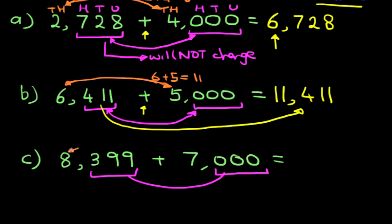The thousands we've got is 8, which is going to be added to the 7,000 over here. So we've got 8 plus 7. 8 plus 7 is 15. And our answer is 15,399. And it really is that simple.